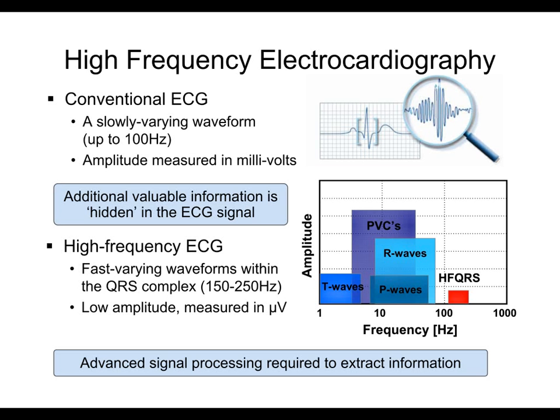Conventional ECG devices typically display signals with frequencies of up to 100 Hz and amplitudes of a few millivolts. However, many studies have shown that high-frequency signals carry important diagnostic information. The high-frequency components of the ECG are mostly concentrated in the QRS complex, and are often referred to as HFQRS.